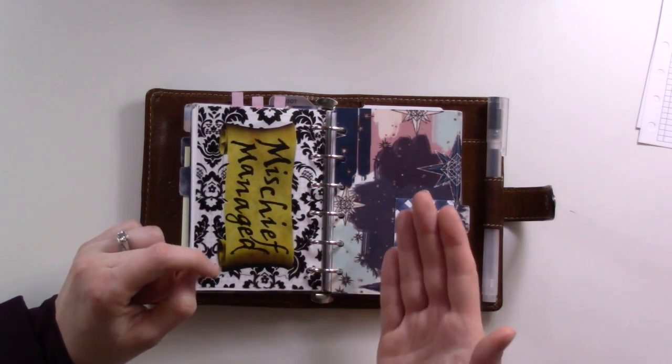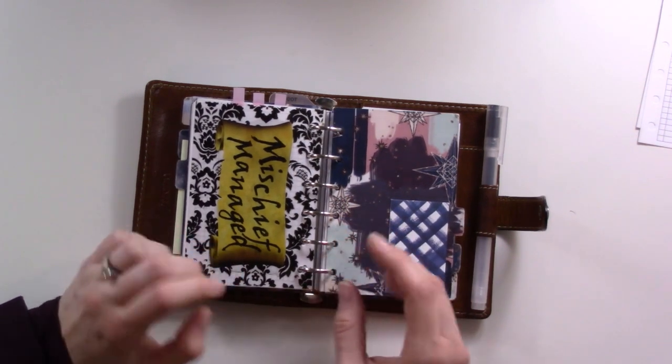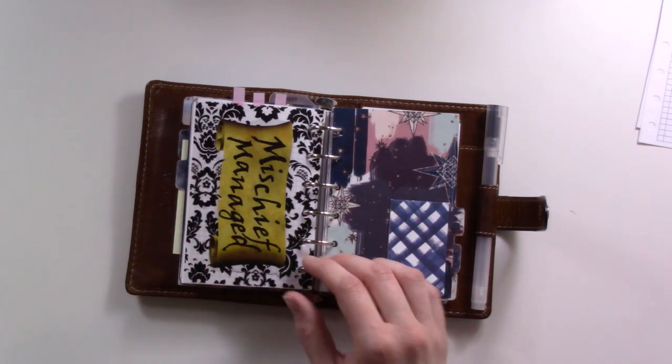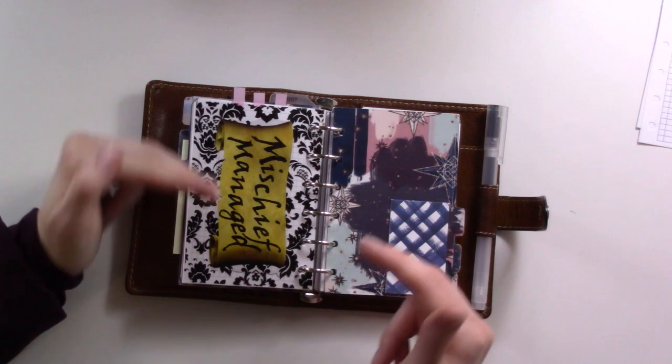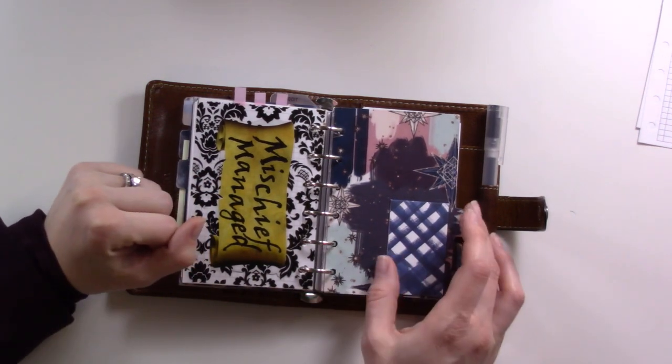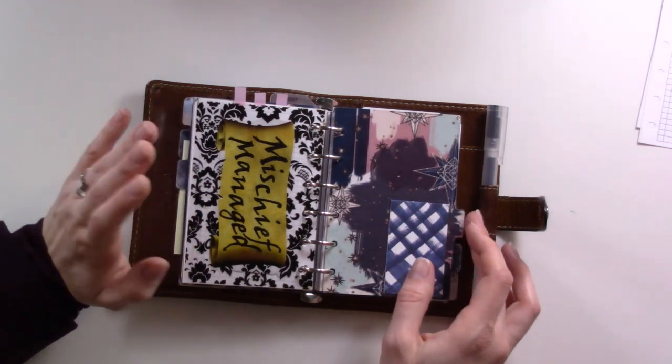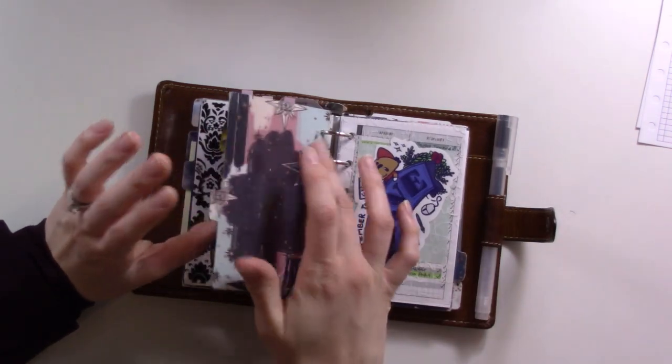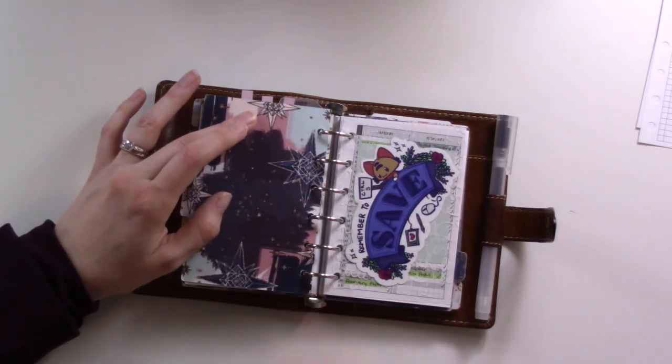This divider was marking off my Hogwarts section of my planner, which I have just today removed all of those inserts because I've really stepped back from my Hogwarts and I'm not like, I don't have any like jobs there anymore, so I don't really need a whole section tracking them.